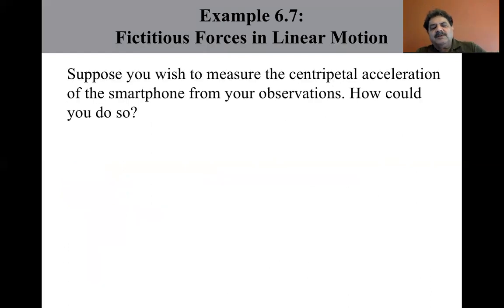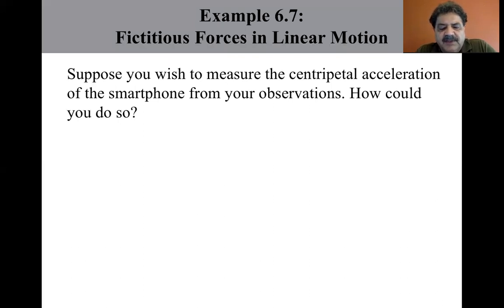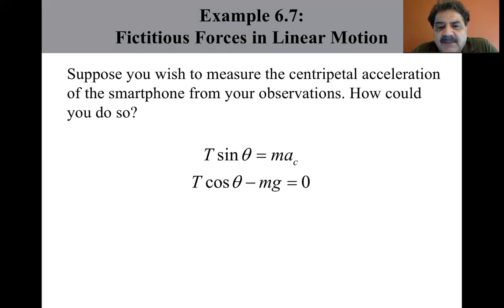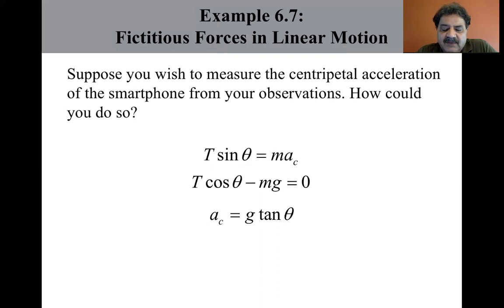Suppose you wish to measure the centripetal acceleration of the smartphone from your observations. Our intuition tells us that the angle θ the string makes with the vertical should increase as the acceleration increases. By solving the equations — T sin θ equals mass times centripetal acceleration and T cos θ minus mg equals zero — simultaneously for the centripetal acceleration, we find that the centripetal acceleration equals g tan θ.